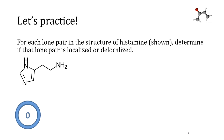The first thing we want to do in figuring out whether any of the lone pairs in histamine are localized or delocalized is we need to find the lone pairs in histamine. Here is a structure of histamine with all the lone pairs shown. Each of the nitrogen atoms has a lone pair. Remember that nitrogen prefers to have three bonds and one lone pair in its structure.